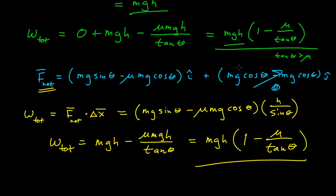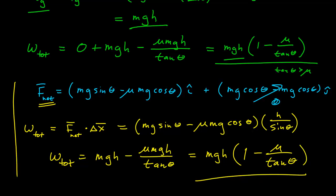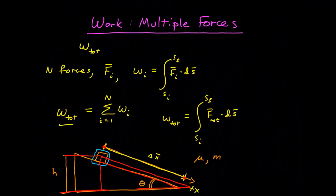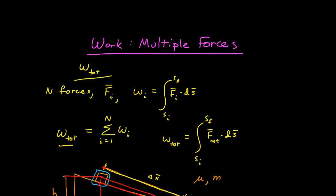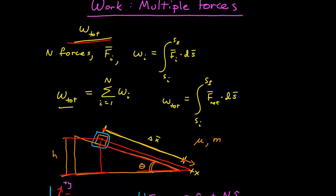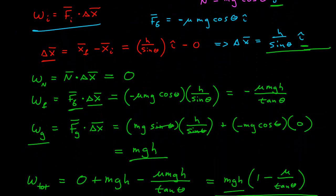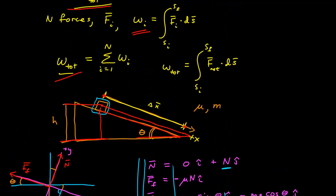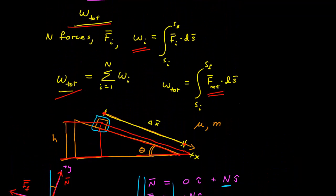While doing it this way seemed like less work, we actually used results from the previous calculation to get there. Nonetheless, there are two ways to calculate the total work given multiple forces: calculate the work from each force and total them together — noting that some individual works may be negative — or calculate the net force first and then find the work from the net force.